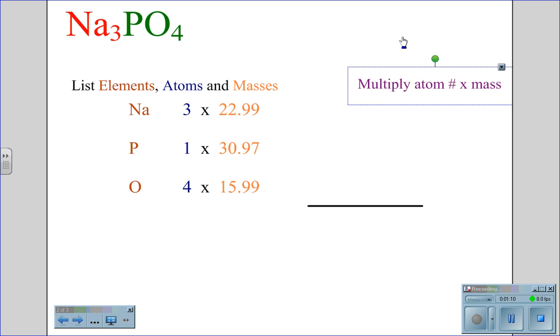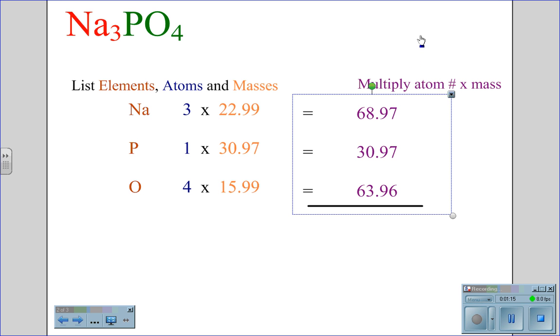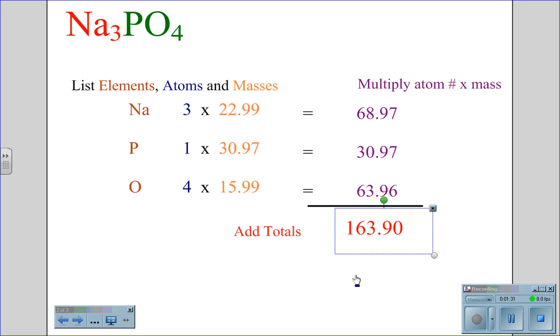I'm now going to multiply the atoms times the mass and get the values 68.97 for sodium, 30.97 for phosphorus, and 63.96 for oxygen. Adding these totals together, I get the atomic mass, or gram formula mass, also referred to as the molar mass, of sodium phosphate at 163.90.